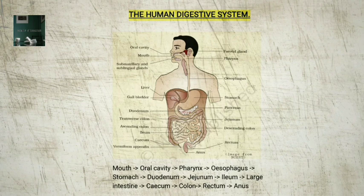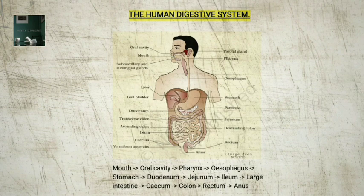The stomach is located in the upper left portion of the abdominal cavity. The stomach has three major parts: 1. Cardiac portion, into which the esophagus opens. 2. Fundic region. 3. Pyloric portion, which opens into the first part of the small intestine.